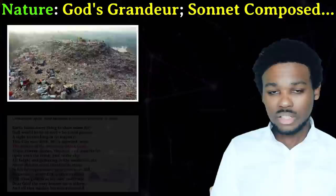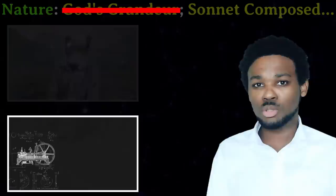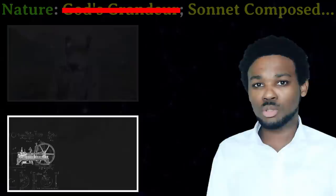In Sonnet Composed Upon Westminster Bridge, we again have man versus nature. The speaker stands on a bridge at dawn and marvels at the beauty of nature. But there isn't just nature there — there are man-made things that make up the city of London. You can see the poem as exploring the conflict between the natural and the man-made worlds.